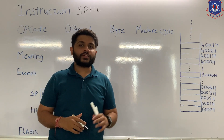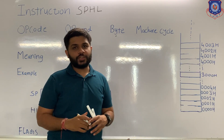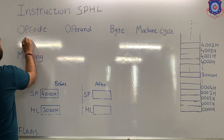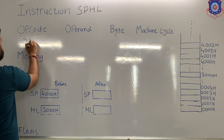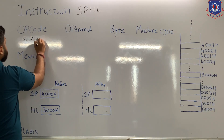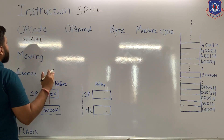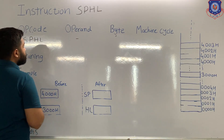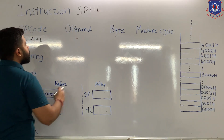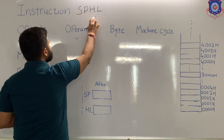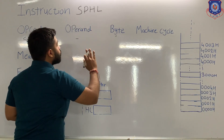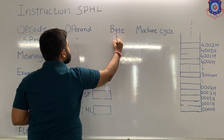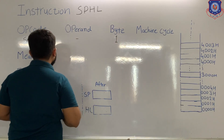Now we are going to see the instruction SPHL. The opcode is the whole instruction itself, that is SPHL. In this instruction, no operand is present — there is no data. This means the instruction is of one byte.